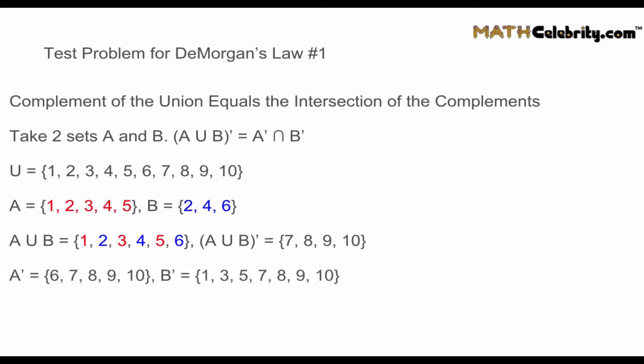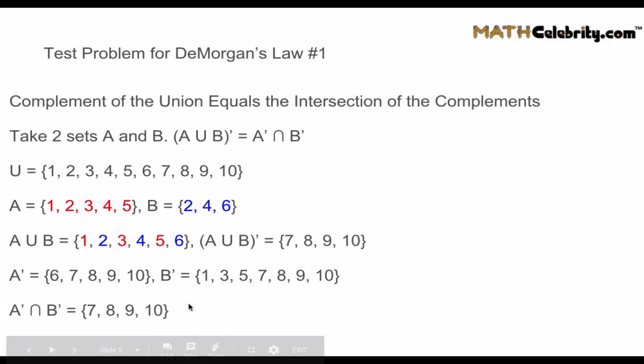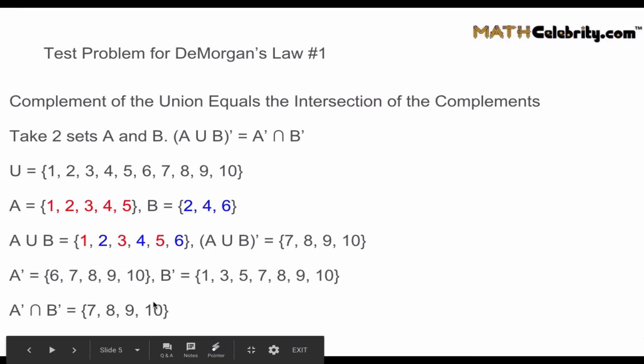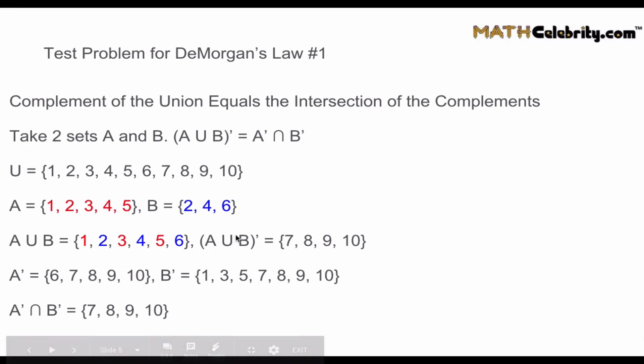Next, A complement is everything not in A but in the universal set: {6, 7, 8, 9, 10}. And B complement — everything not in B — is {1, 3, 5, 7, 8, 9, 10}. Now, if we take the intersection of A complement and B complement — everything in both A complement and B complement — we get {7, 8, 9, 10}. Notice these are the exact same four elements as in (A union B) complement, confirming DeMorgan's Law 1.